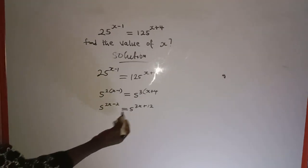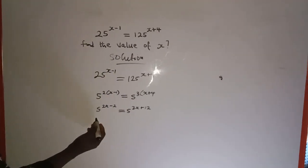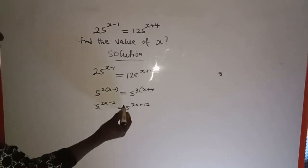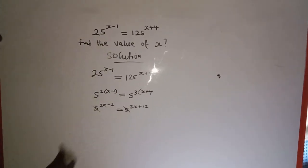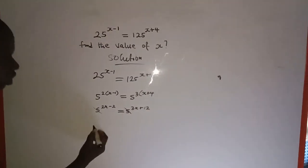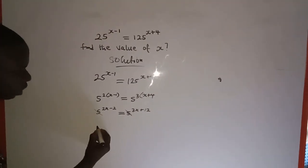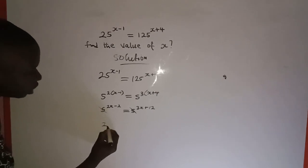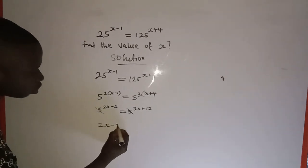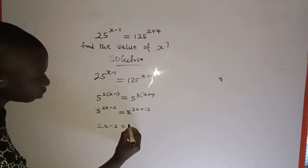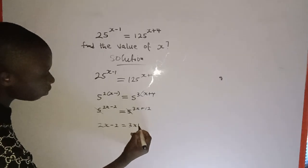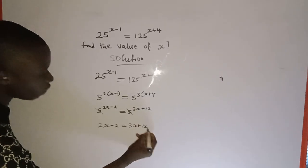Since the bases are now equal, we cancel the base and equate the powers. So the equation becomes: 2s minus 2 is equal to 3s plus 12.